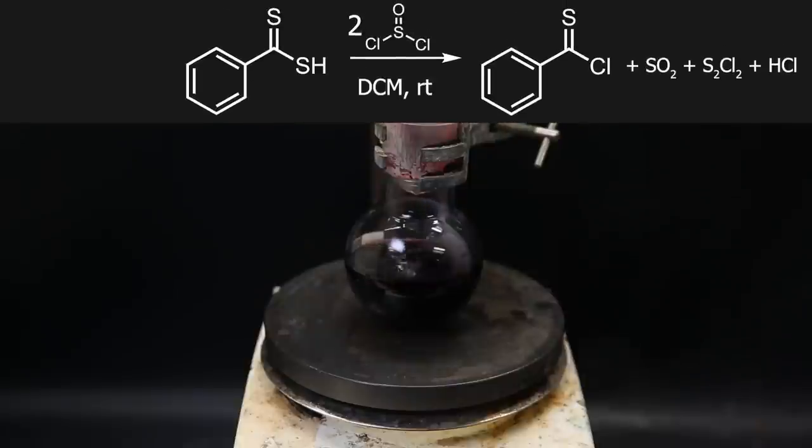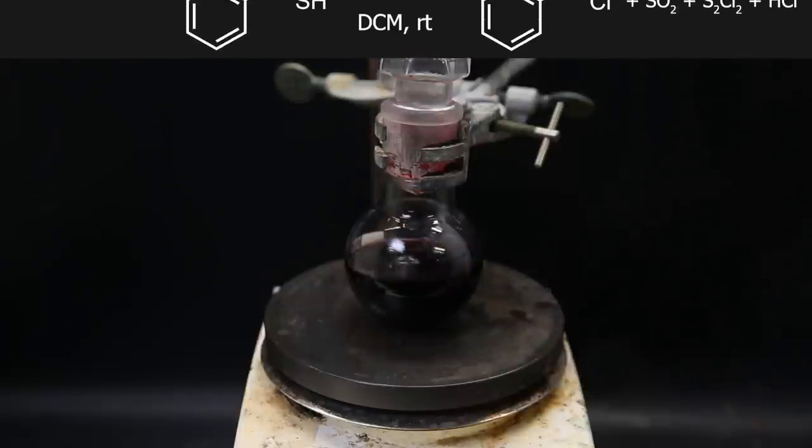In the reaction, two equivalents of thionyl chloride will chlorinate the diethylbenzoic acid, to thiobenzoyl chloride, while also forming sulfur dioxide, disulfur dichloride, and hydrochloric acid. When that is done, it looks pretty much the same, and I set the flask in a heating mantle.